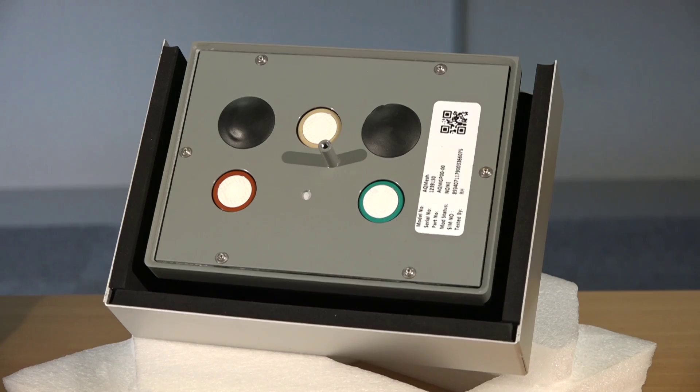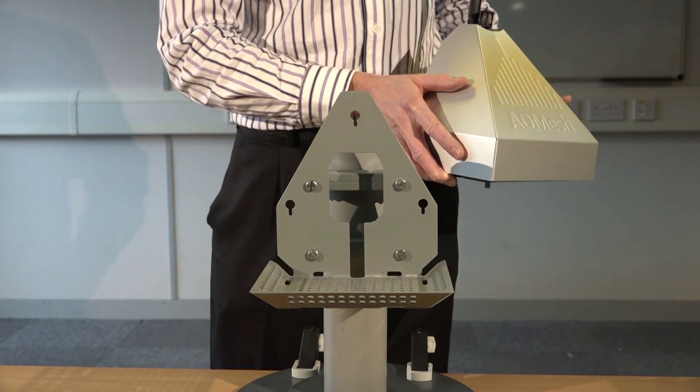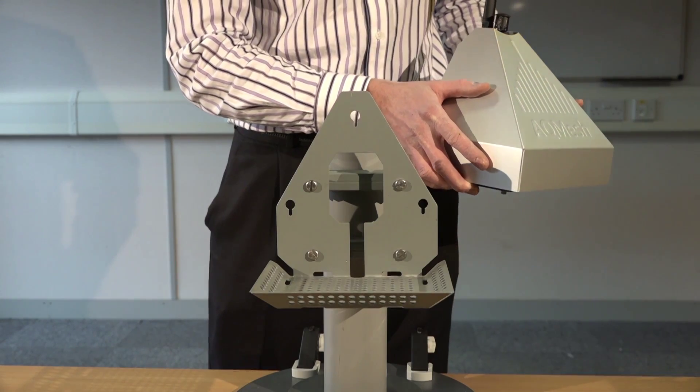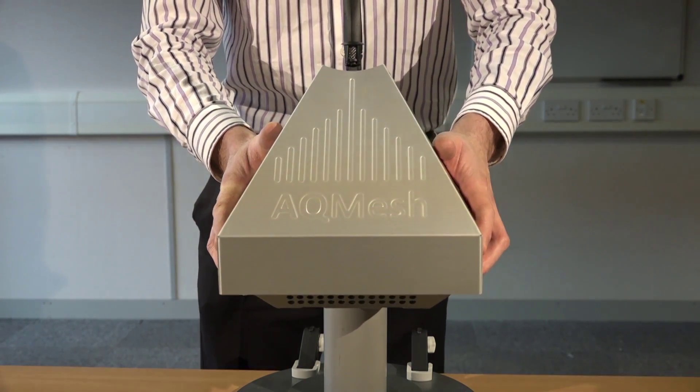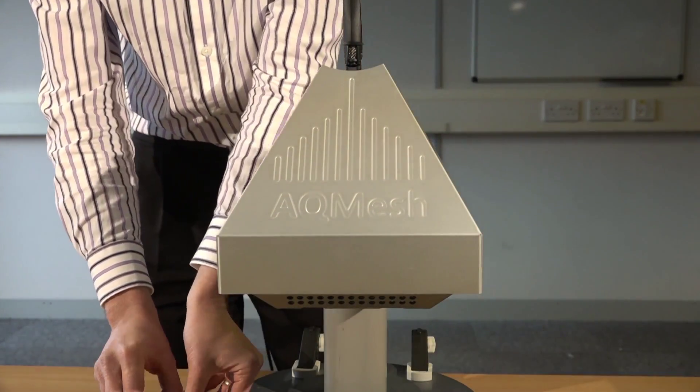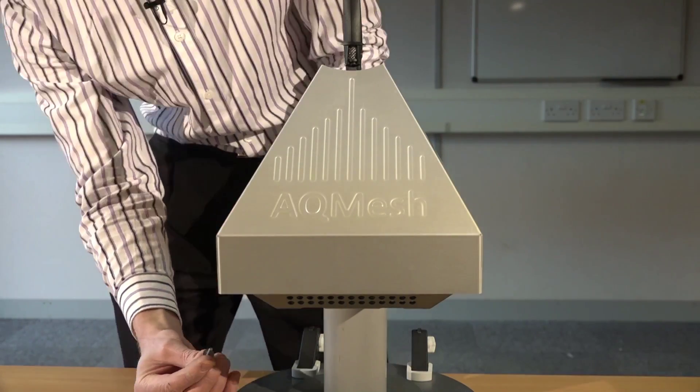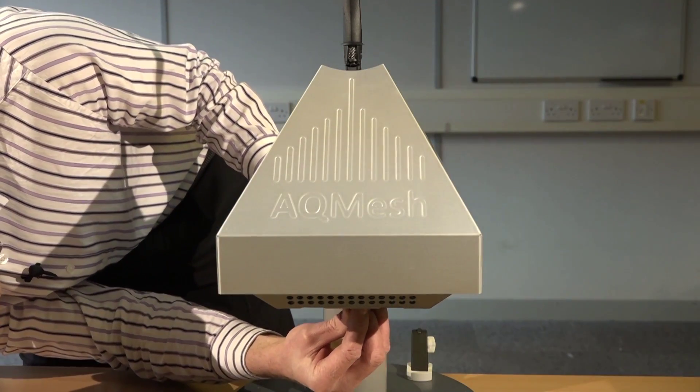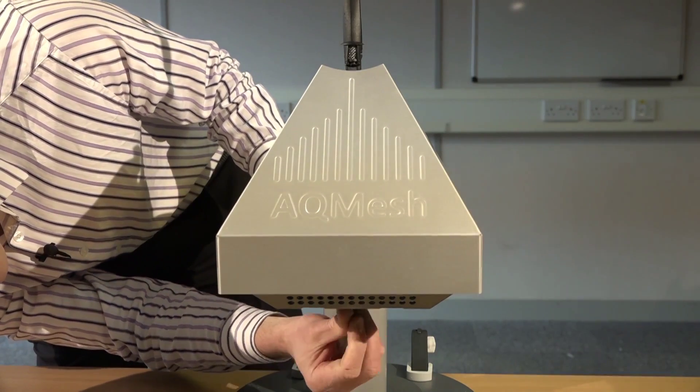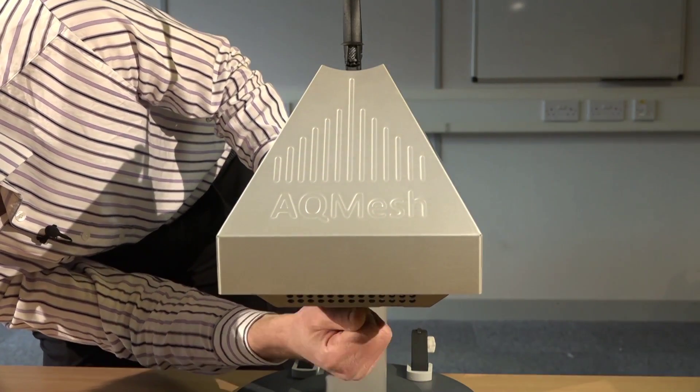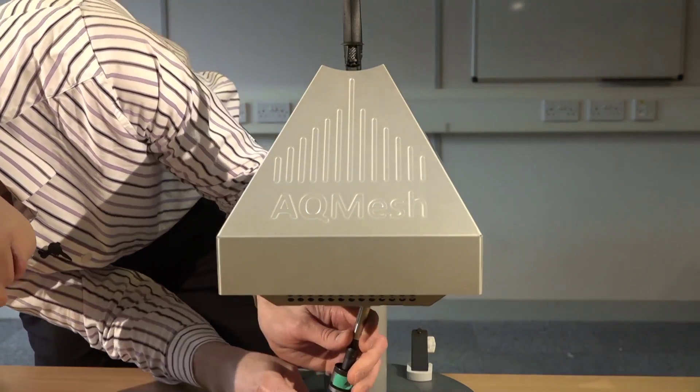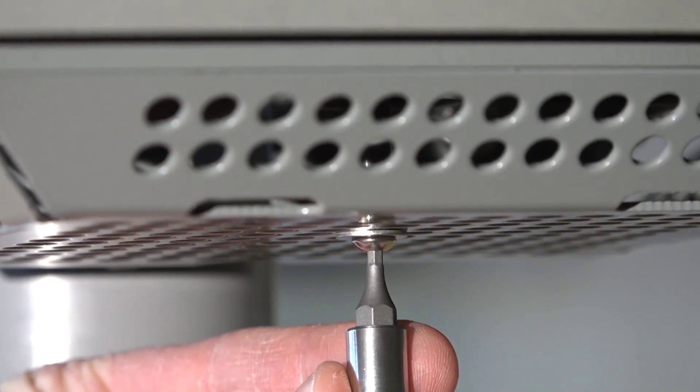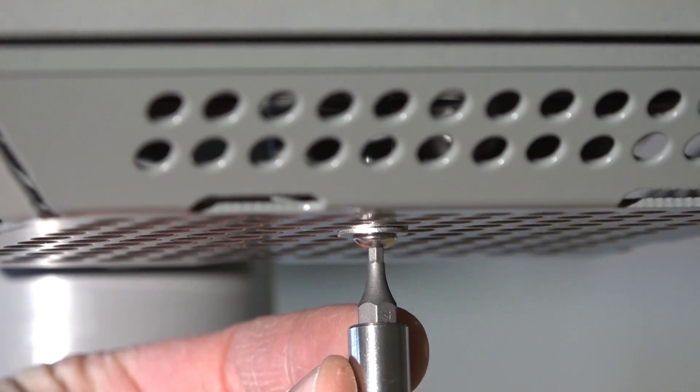The pod is now ready for installation on the mounting bracket, on the post. The final aspect of installation is securing the pod to the mounting. The unit clips into place, then is secured with the security pin underneath. Hand tightened. And then finally, secured with a tool.